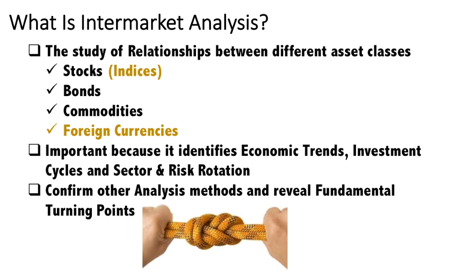For example, the USD/JPY pair. Intermarket analysis is so important because it identifies economic trends, investment cycles, and sector and risk rotation. This year, because of the problems in oil, you see that the S&P 500 can move really huge once the oil and gas sectors have good news. If oil is going up, money is pouring into the sector, and suddenly the S&P 500 goes up — and this will affect forex pairs, for example the USD/CAD, the loonie, which is directly correlated to oil. Intermarket analysis also confirms other analysis methods and reveals fundamental turning points.